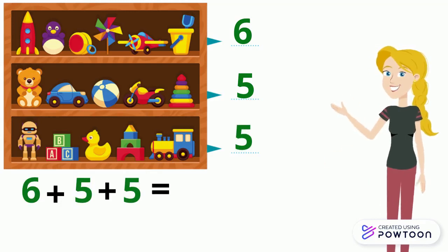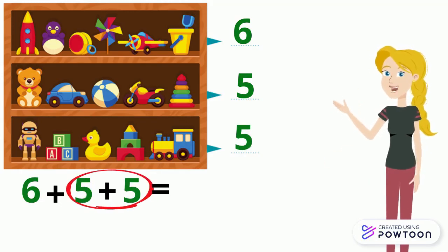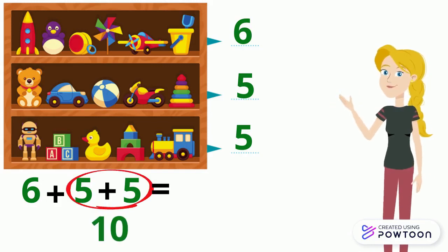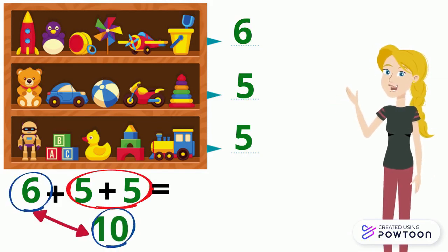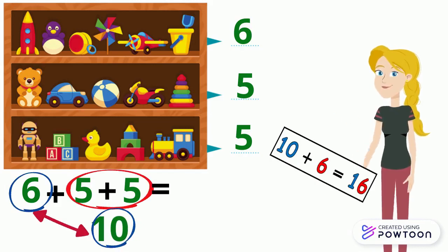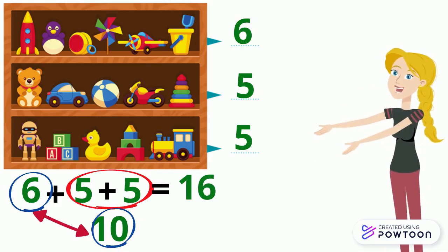We will start by adding 5 plus 5. The double of 5 is 10. Then we add 10 with 6. The result is 16. So, 6 plus 5 plus 5 equals 16.